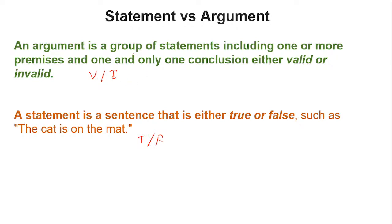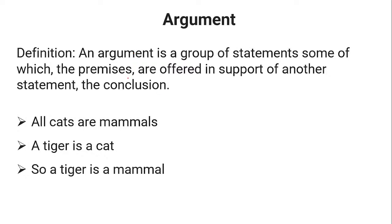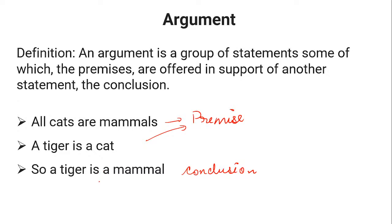An argument is a group of statements from which some are premises and exactly one is a conclusion. For example: 'All cats are mammals. A tiger is a cat. Therefore, a tiger is a mammal.' These first two sentences are called premises, and the final sentence is the conclusion. An argument can have one premise or more than one premise, but the conclusion will be one and only one — you cannot have two conclusions.